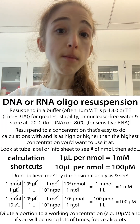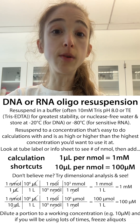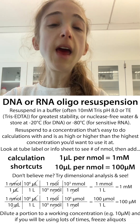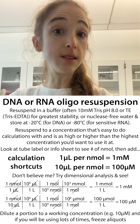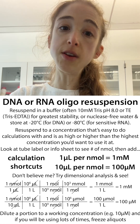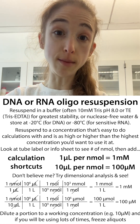You can add one microliter per nanomole if you want a one millimolar solution, and if you want a hundred micromolar solution then you add 10 microliters per nanomole.